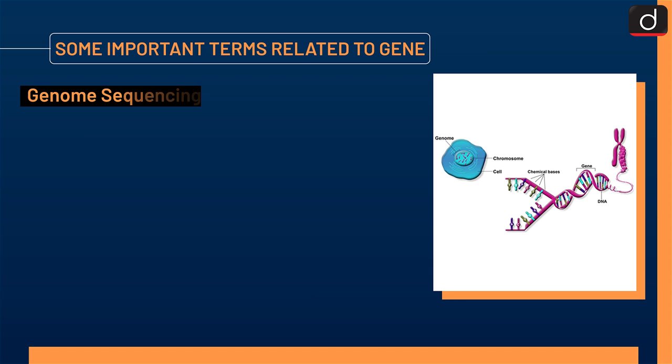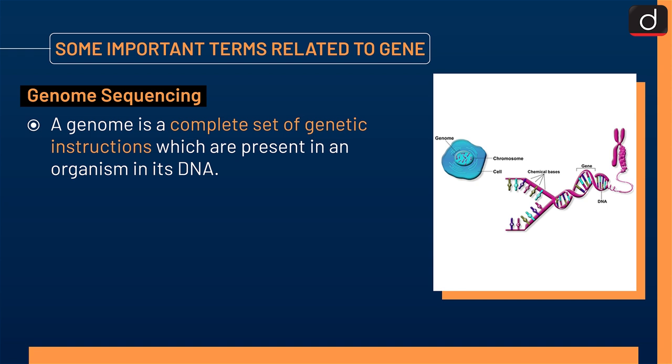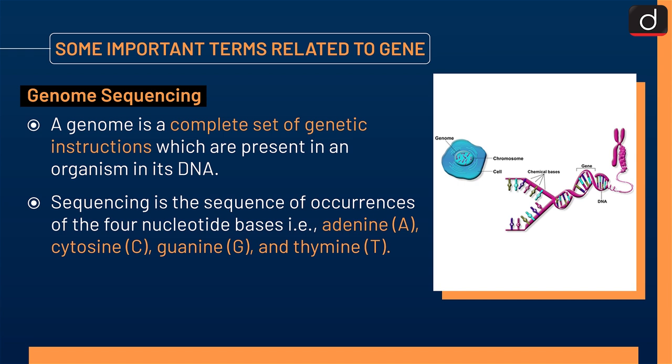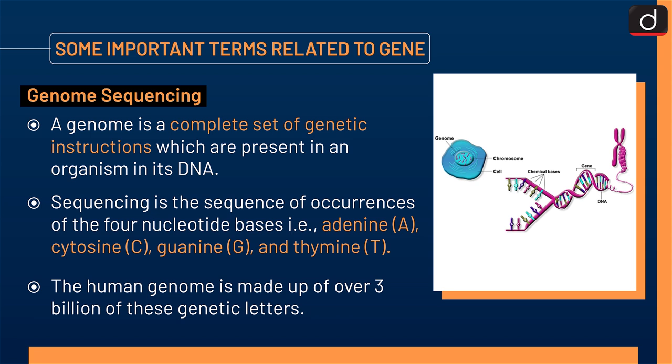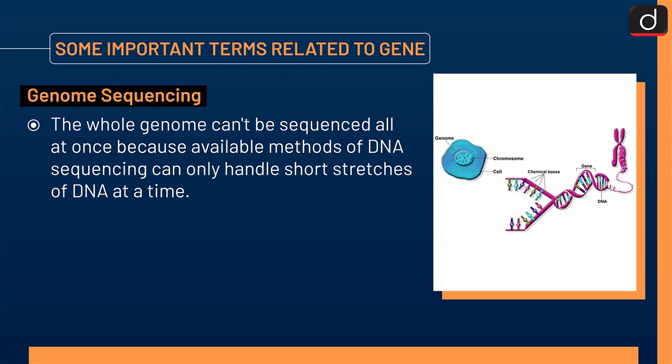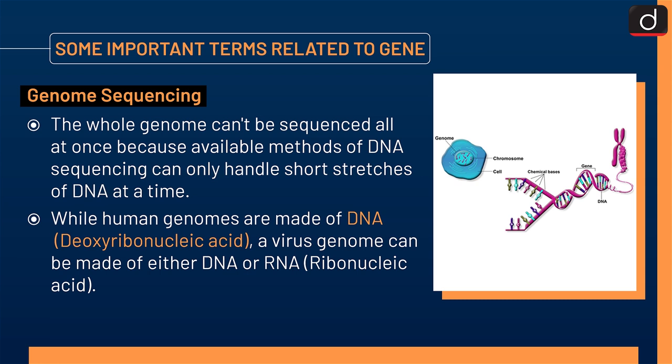Next is genome sequencing. A genome is a complete set of genetic instructions present in an organism in its DNA. Sequencing is the sequence of occurrences of the 4 nucleotide bases: adenine (A), cytosine (C), guanine (G), and thymine (T). The human genome is made up of over 3 billion of these genetic letters. The whole genome can't be sequenced all at once because available methods of DNA sequencing can only handle short stretches of DNA at a time. While human genomes are made up of DNA, that is deoxyribonucleic acid, a virus genome can be made of either DNA or RNA, that is ribonucleic acid.